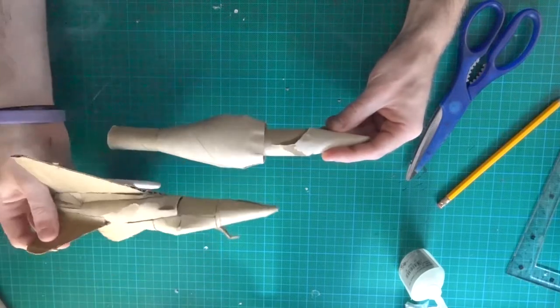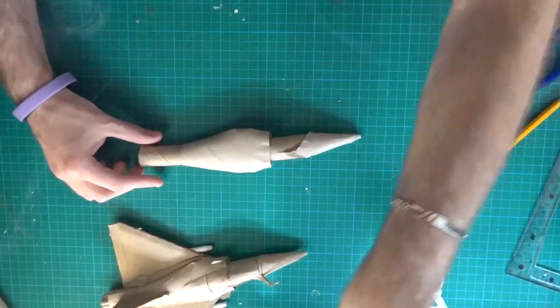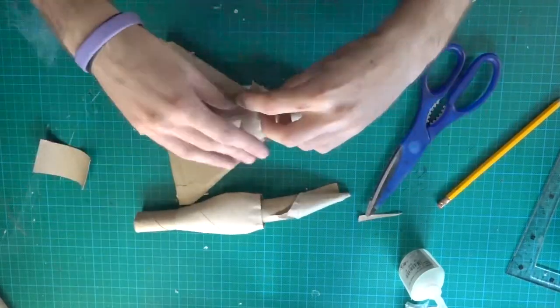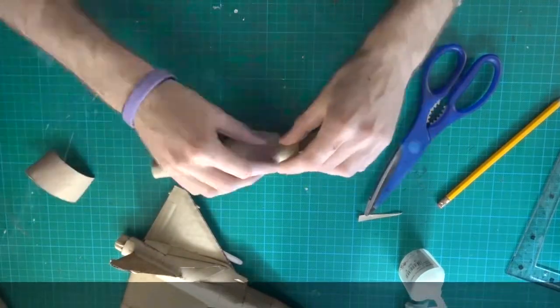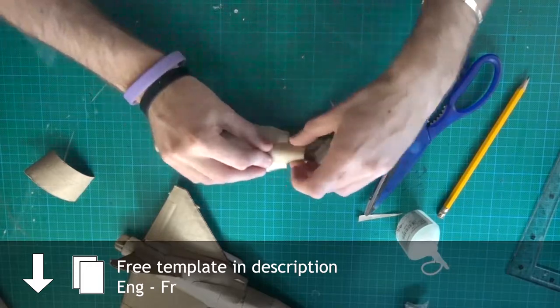Now, I will make the cockpit. I make it from cardboard scrap. But, I advise you to make it from the plane that you can find for free in the description.